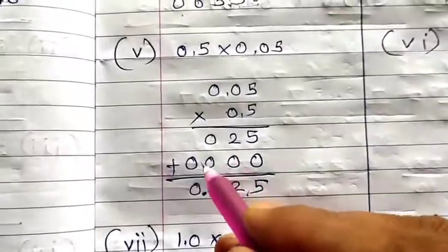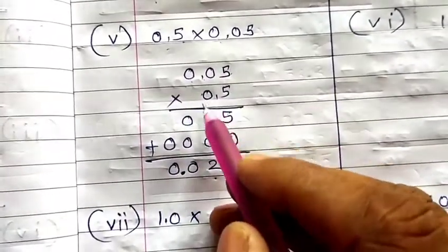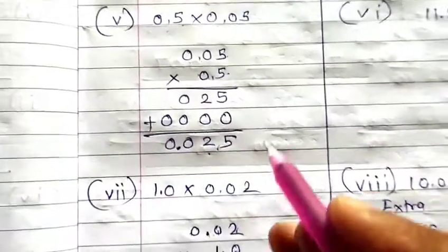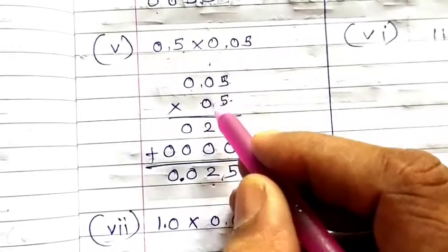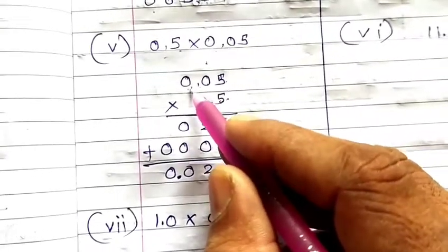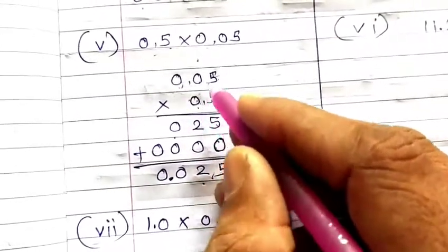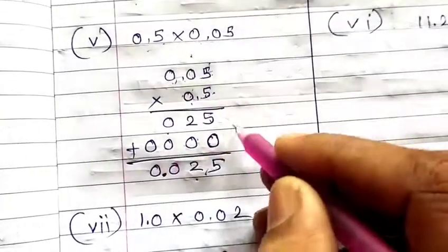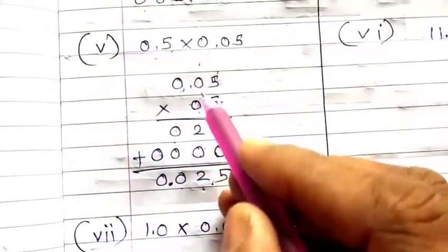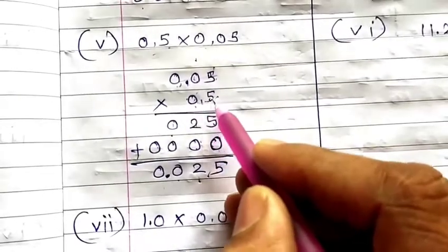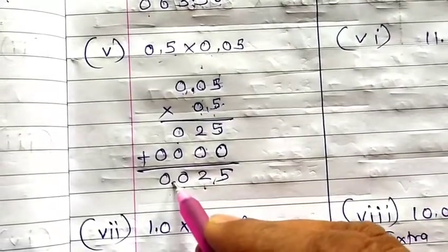Then 0.5 multiplied by 0.05. 5 fives are 25, carry 2; 5 zeros are 0 plus 2 is 2; 5 into 0 is 0. Place a zero, then multiply 0 by all digits to get 0. Sum is 025. Count decimals: 2 digits after decimal in 0.05 and 1 digit in 0.5, total 3. Leave 3 digits from the last and place your decimal — answer is 0.025.